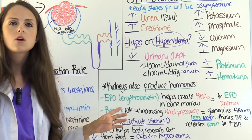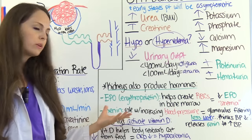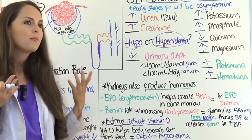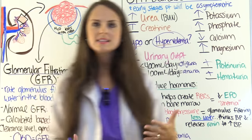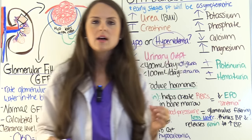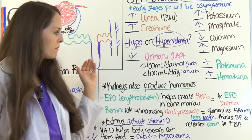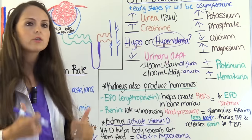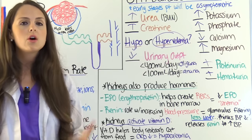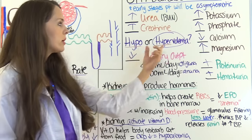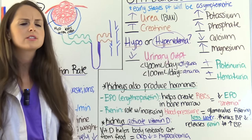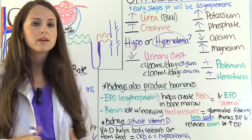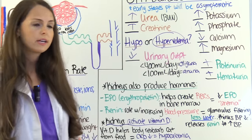Another hormone the kidneys produce is renin, which plays a role in increasing and maintaining blood pressure. With a poorly filtering glomerulus, those cells sense low water filtration and think blood pressure must be low, so they release renin to increase blood pressure. But we're already in a hypervolemic state with existing hypertension, so releasing more renin increases blood pressure even further, causing even more damage to the kidneys.